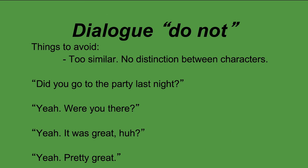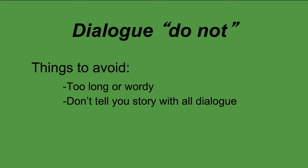Also work on distinction between characters. When you read through dialogue, you shouldn't have trouble knowing who's speaking — if it's very similar with no distinction, that's a problem. Think of the language to the extreme: a California surfer versus someone from New York City — their conversation will be very different. Avoid very plain, neutral language. Don't get too wordy; keep it short unless it needs to be longer. And don't tell your story without dialogue when you can tell it with visuals — use visuals.